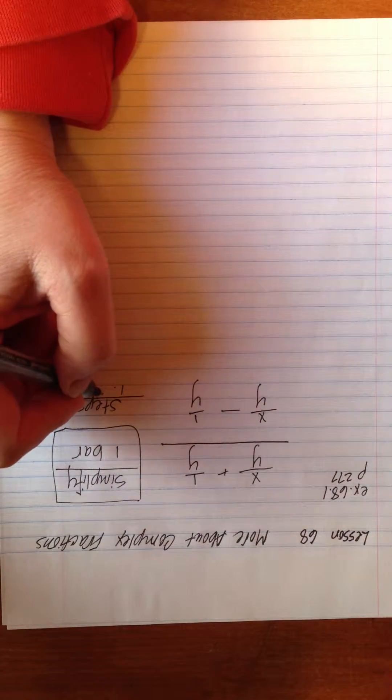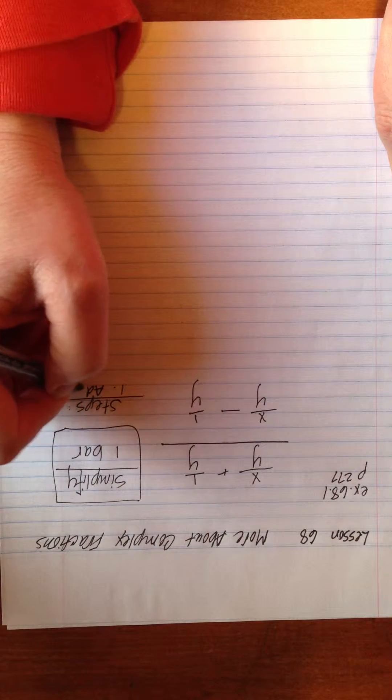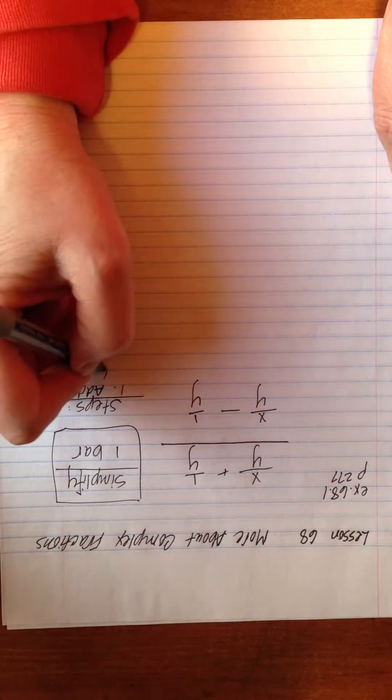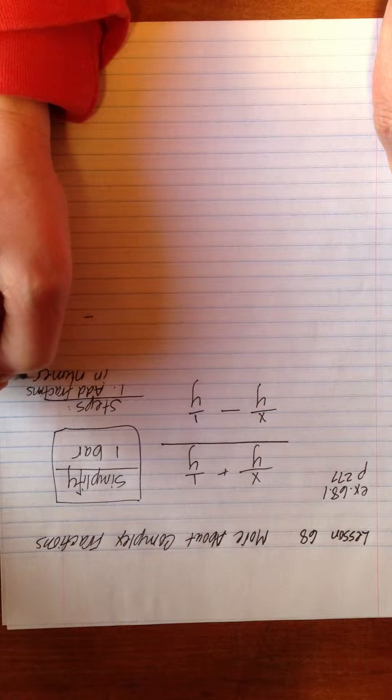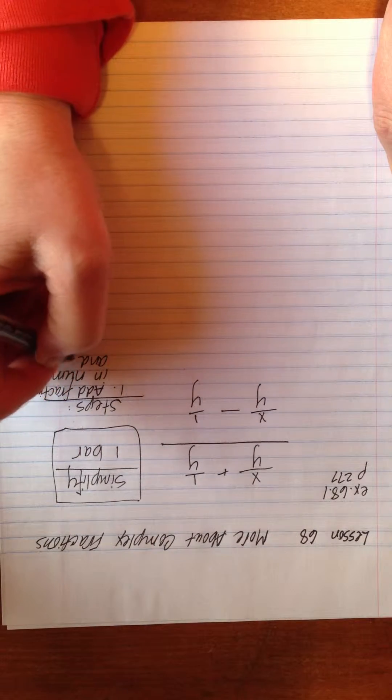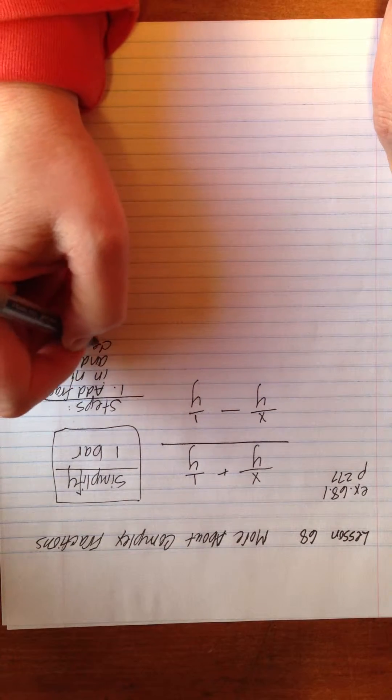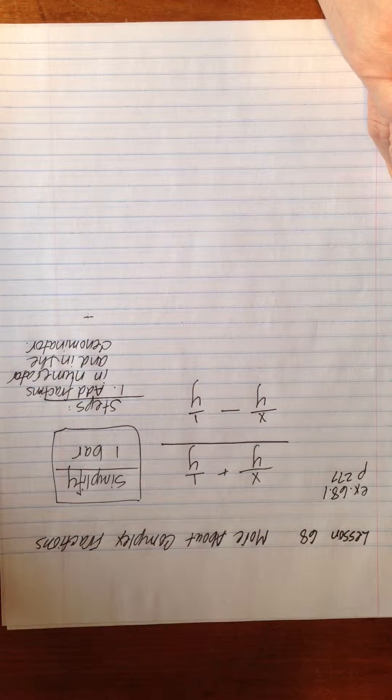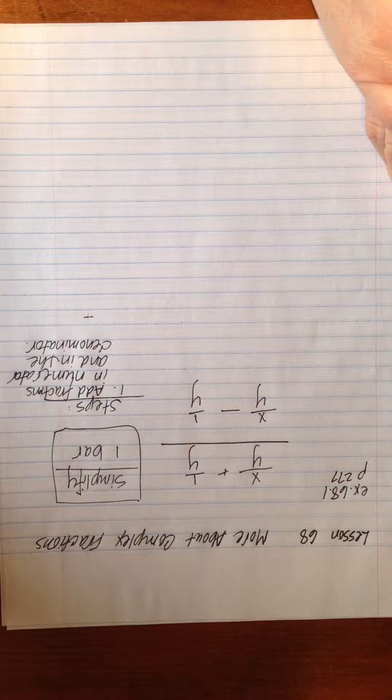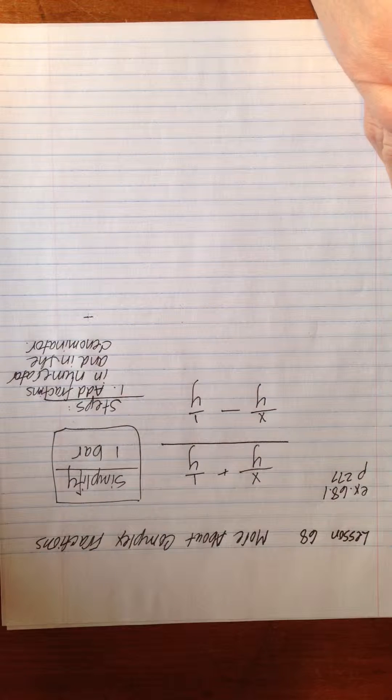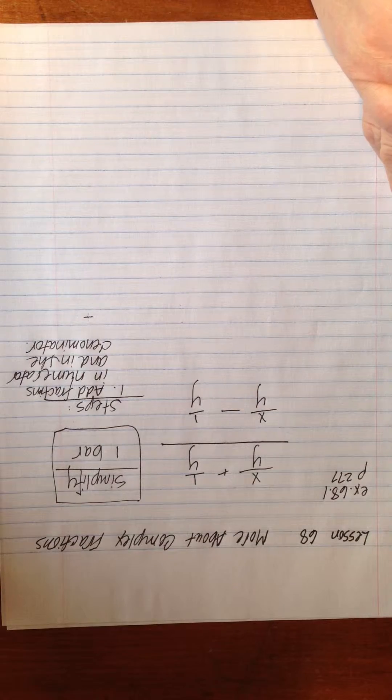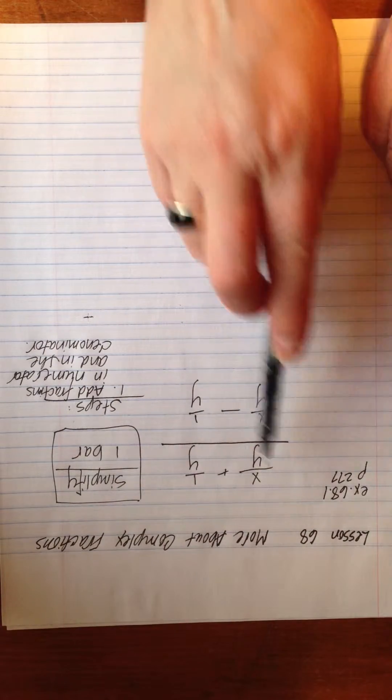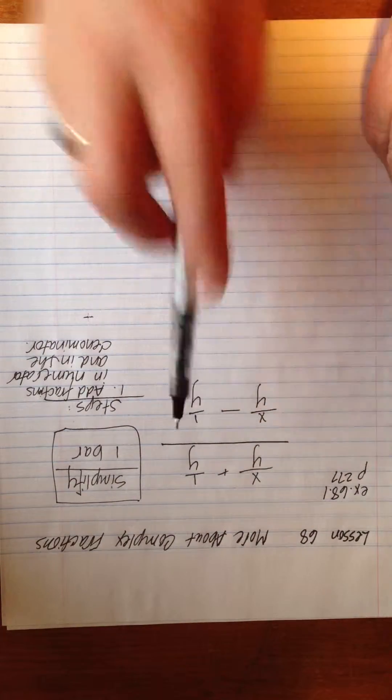First thing we're going to do is add the fractions in the numerator and in the denominator. Now go ahead and write that. And then I will stress something important to you. I'm waiting while you write. And I'm thinking you're done probably about now. Okay, we're not adding, we're adding just the two dudes in the numerator and the two dudes in the denominator. We're not adding them together. We're just combining these dudes, combining these dudes. So let's do that.